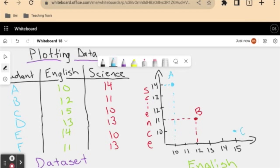Student D got 13 in English, 13 in science. So that will be roughly here.